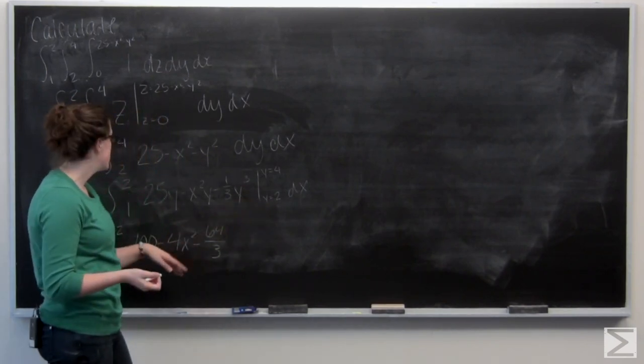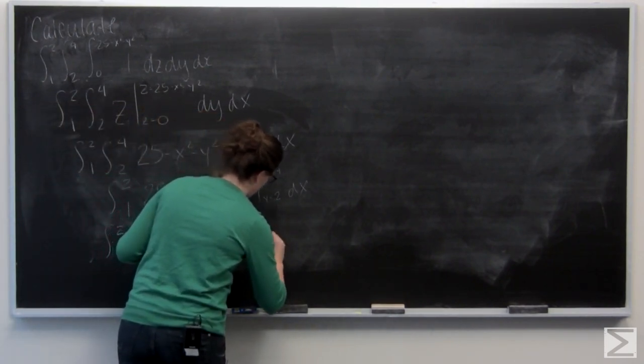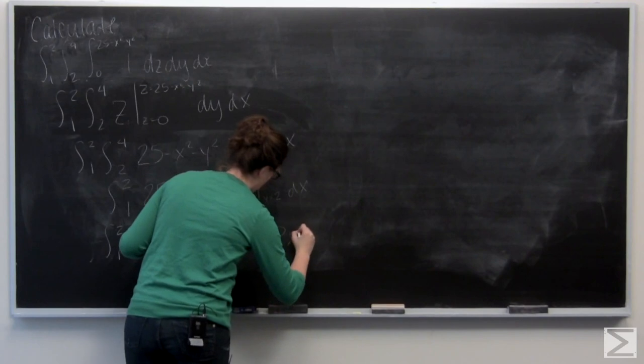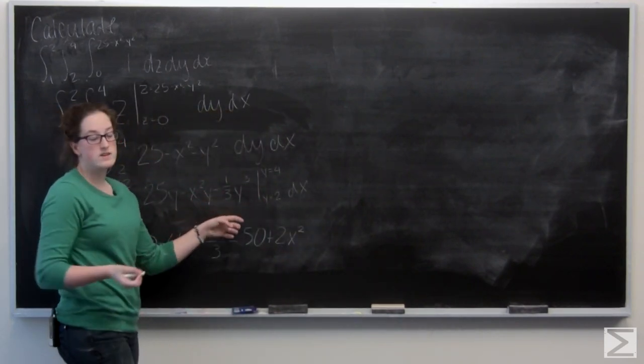Now we're going to plug in y equals 2. So subtract 50, add 2x squared, and add 8 thirds.